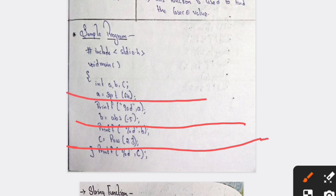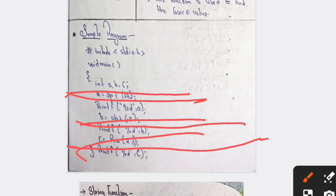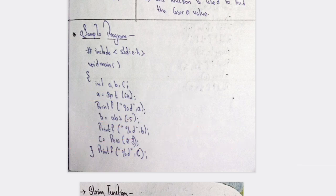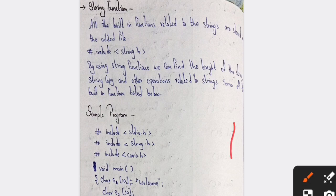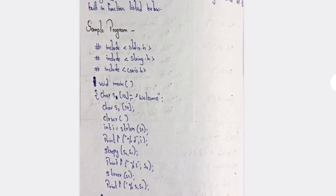Here we are using abs of minus five, pow for power, and two minus three on this three lines alternatively — the remaining program is the same. Just remember the programs. Next, string function is one of the types of built-in functions. Just remember the side heading as well as the sample program.